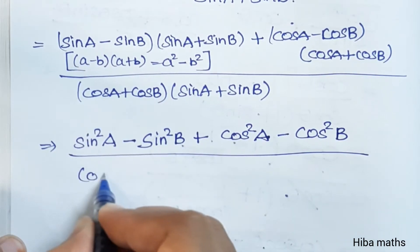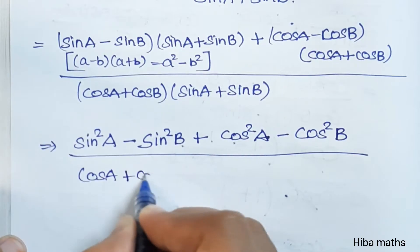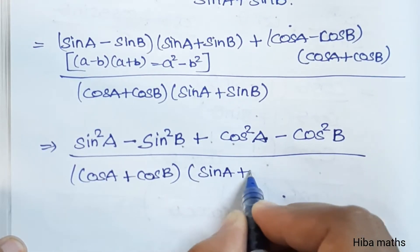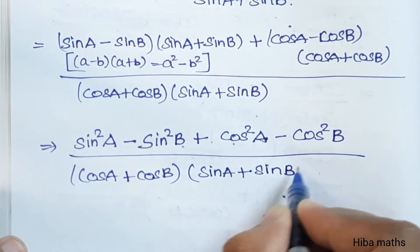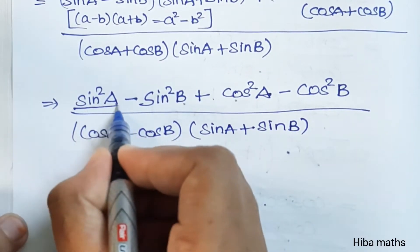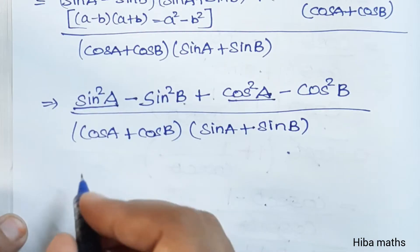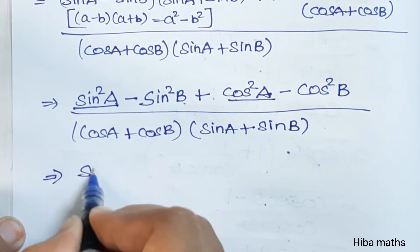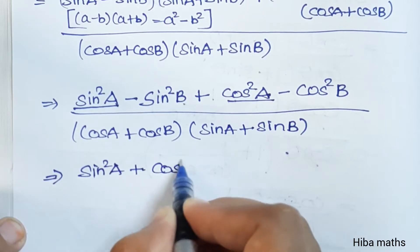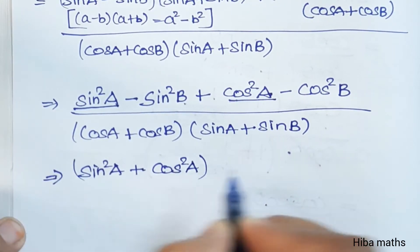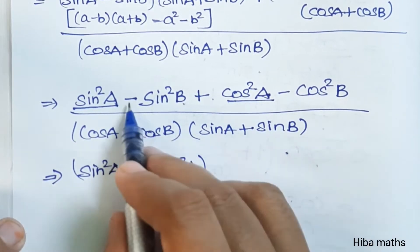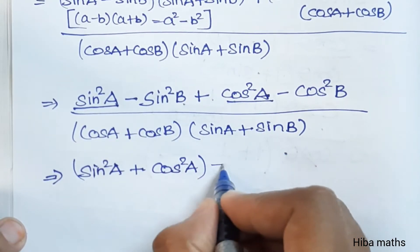This is divided by cosB into sinA plus sinB. Now consider sin squared A plus cos squared A — this equals one. The remaining terms balance: sin squared B and minus cos squared B give minus sin squared B minus cos squared B.